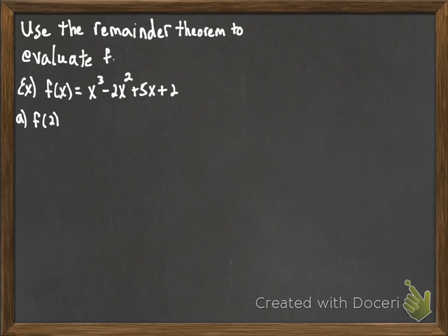So previously we talked about the remainder theorem and how we can use it to evaluate a function. Here we have a polynomial f(x) = x³ - 2x² + 5x + 2, and we want to use the remainder theorem to evaluate f(2).